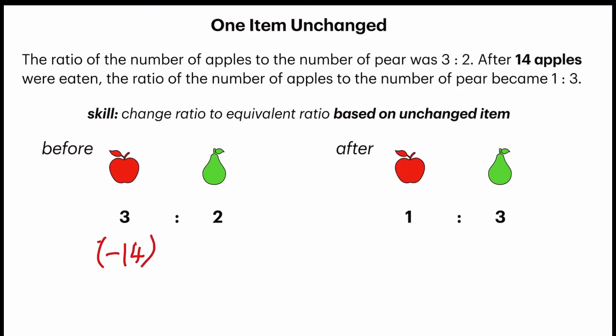Based on the skill we have learned, we are supposed to change to an equivalent ratio based on the unchanged item. What's the item that's unchanged? It's the number of pears. But let's take a look at the pear units — it's 2 over here and it's 3 over here. So our job is to change them into a constant number that's the same for both. We look at the common multiple of 2 and 3, which is 6.